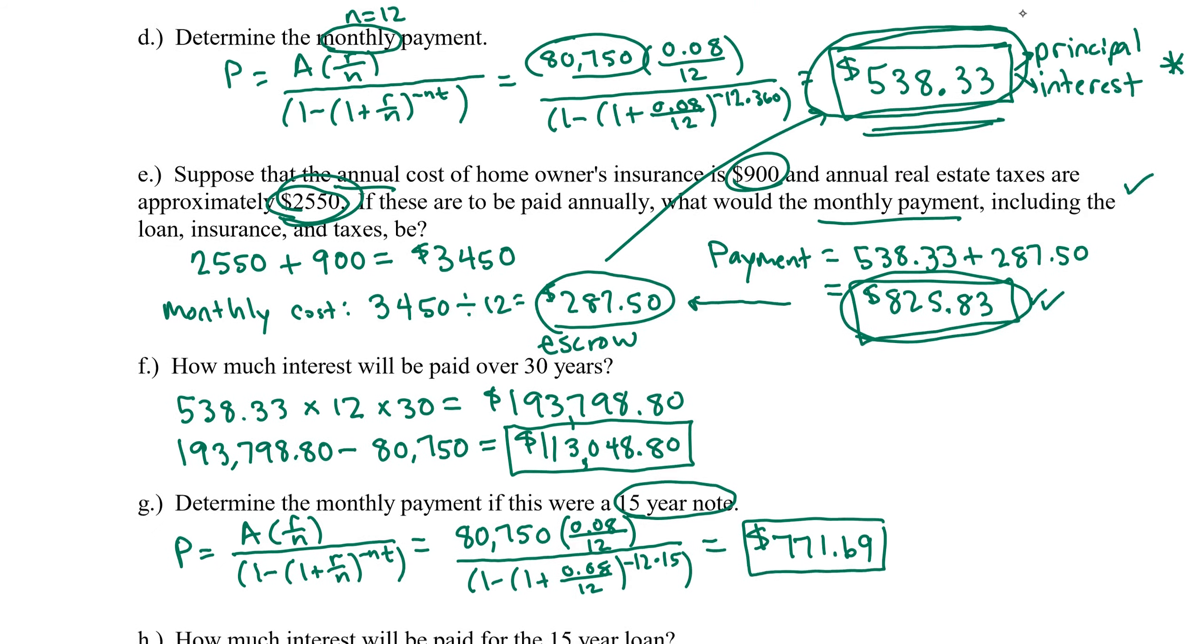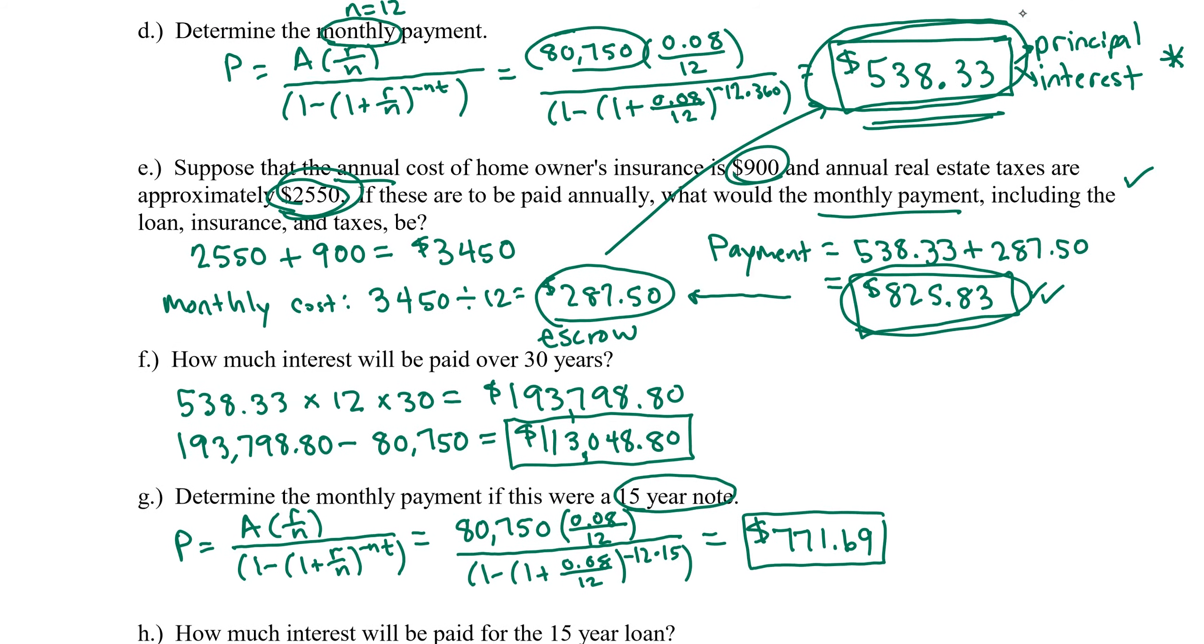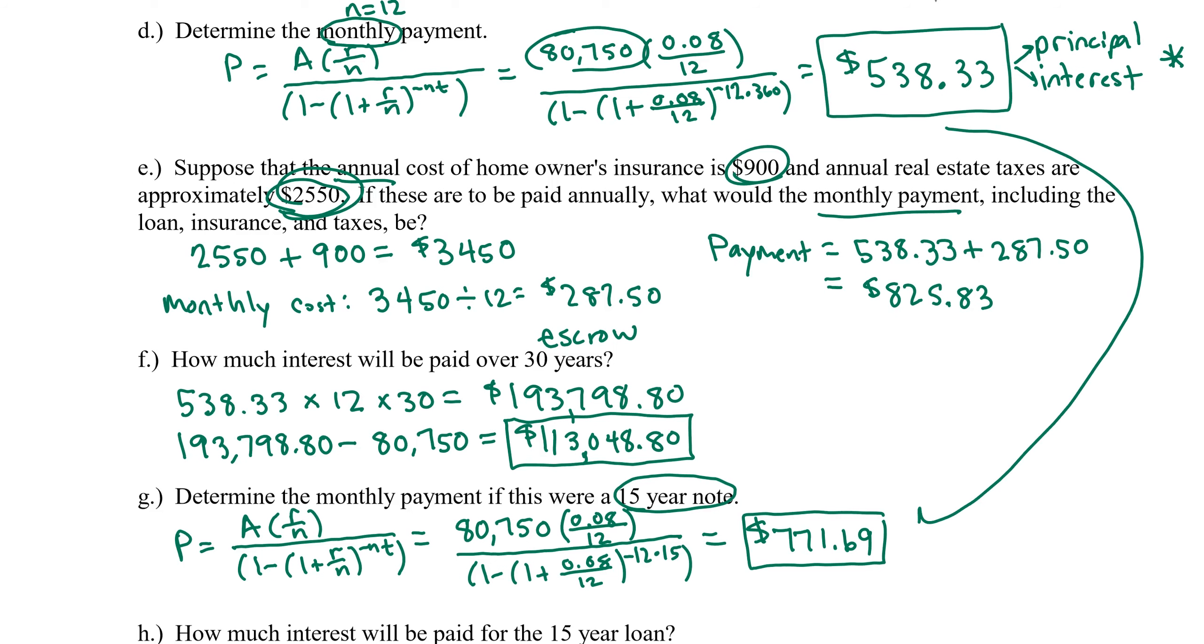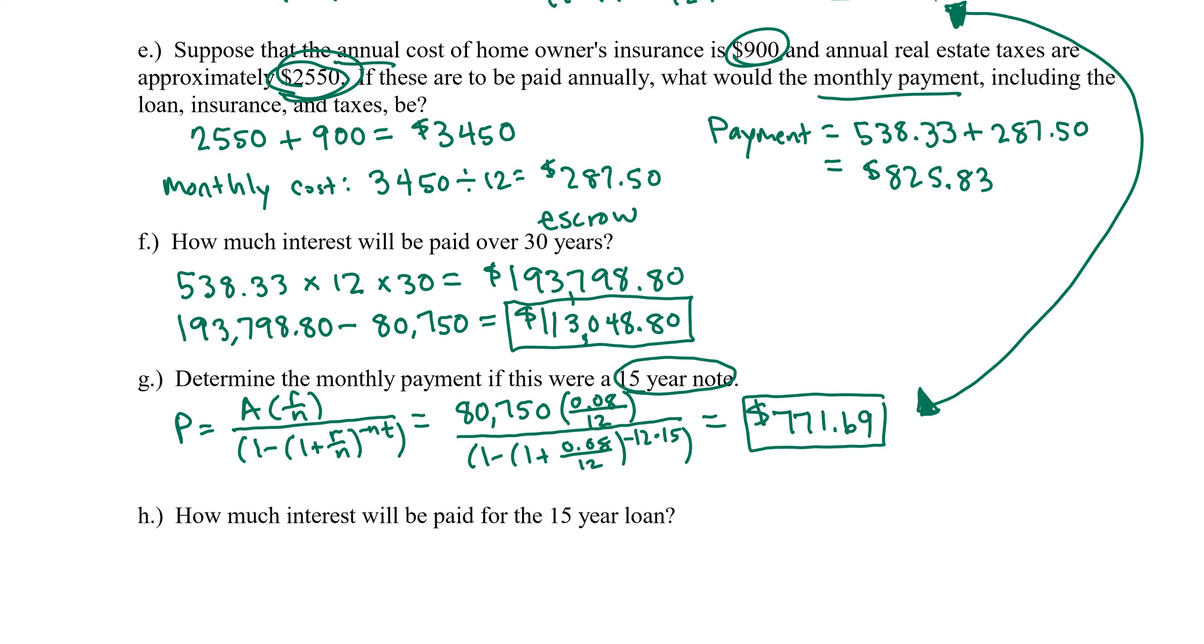So notice we have shortened the term of the loan. We're going from a 30-year note to a 15-year note, but our payment is higher. For the 30-year note, we're not going to look at the value including the homeowner's insurance and the real estate taxes. We want to go back up here to just looking at the charge for principal and interest. So I want to compare this number and this number. So the $538.33 is the payment for principal and interest on a 30-year note, and this one is the payment for principal and interest on a 15-year note. The payment is higher, but let's see where the difference really lies.